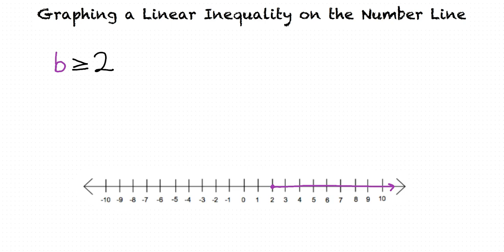So to graph a linear inequality, we first plot the number on the number line and decide if it's open or filled in. And then we decide which side of the number line to highlight. Sounds like you understand graphing a linear inequality on the number line.